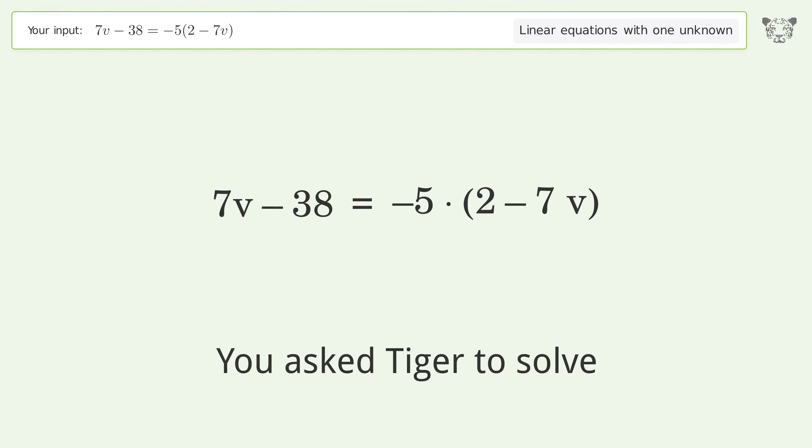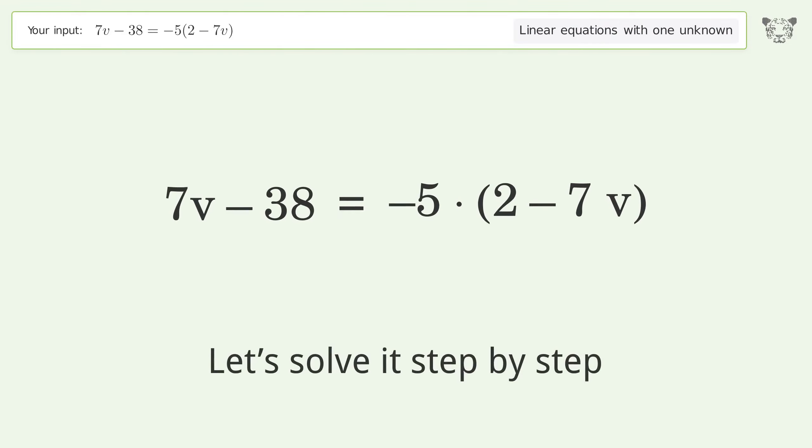You asked Tiger to solve this linear equation with one unknown. The final result is v equals negative one. Let's solve it step by step. Simplify the expression.